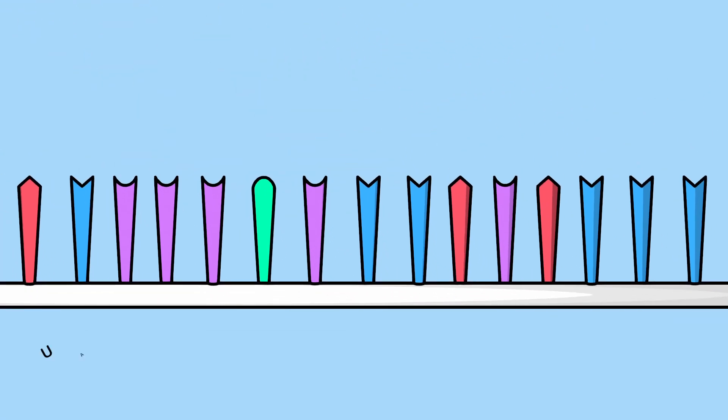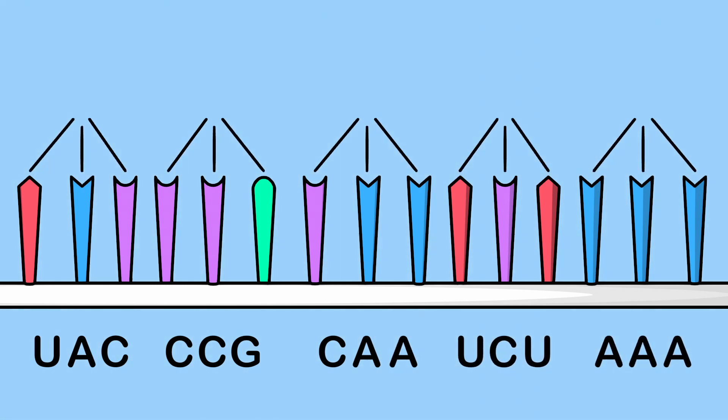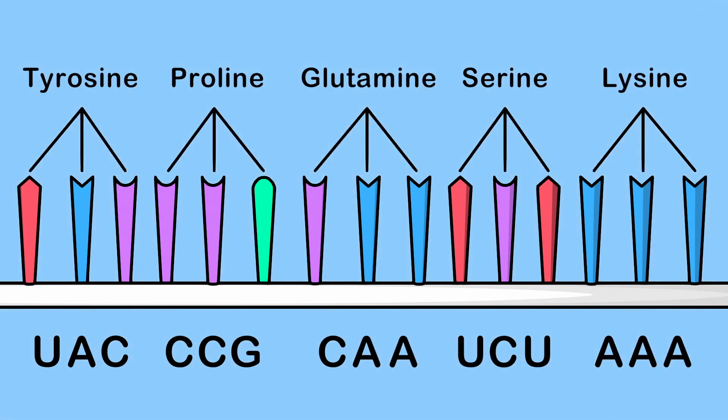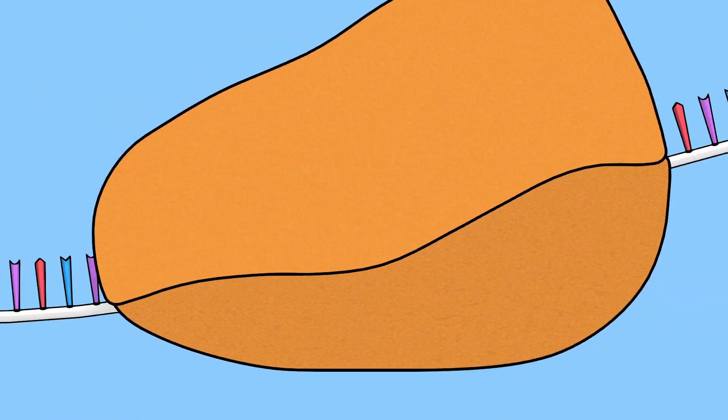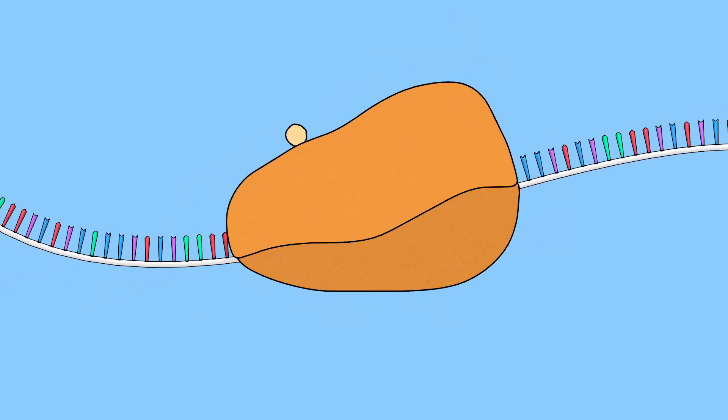Each set of three DNA letters encodes a specific amino acid. Chains of amino acids assemble into proteins.